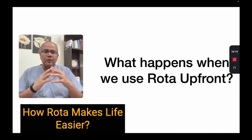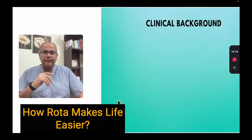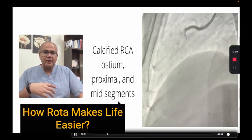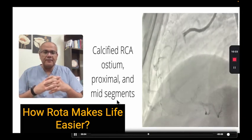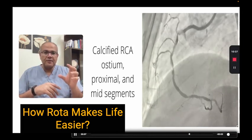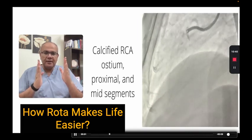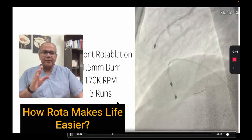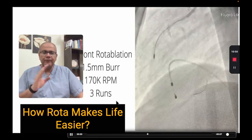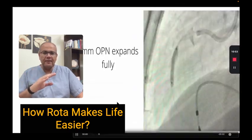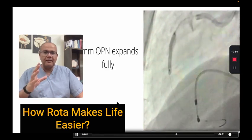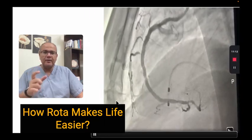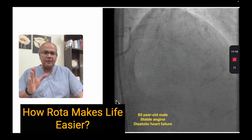So we've seen what happens when we ignore proper vessel preparation — catastrophes can happen. What happens when we use upfront rotational atherectomy? This is a 59-year-old gentleman with recurrent acute coronary syndromes. We can see why: dense calcification in the ostium of the right coronary artery, the proximal RCA, and the mid RCA. Seeing a long segment of fluoroscopic calcium, we don't waste time with balloons. We go directly with rotational atherectomy upfront — 1.5 mm burr, three runs, we ablate the lesion. We confirm success by fully expanding a 3 mm balloon at the lesion and ostium of the RCA. The stent was deployed, the vessel was optimized, and the final result was great.